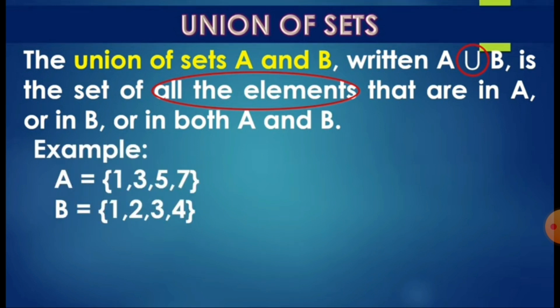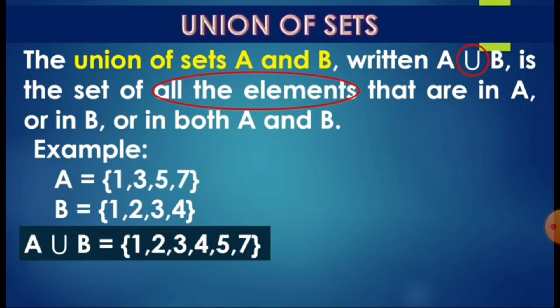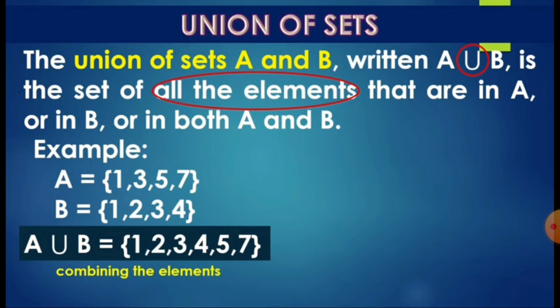For example, let's find the union of set A and B. Set A has elements 1, 3, 5, 7. Set B has elements 1, 2, 3, 4. We have to combine all the elements, so the answer would be 1, 2, 3, 4, 5, and 7. Note: since 1 and 3 are common elements, just write them once. Don't write repeated elements multiple times.